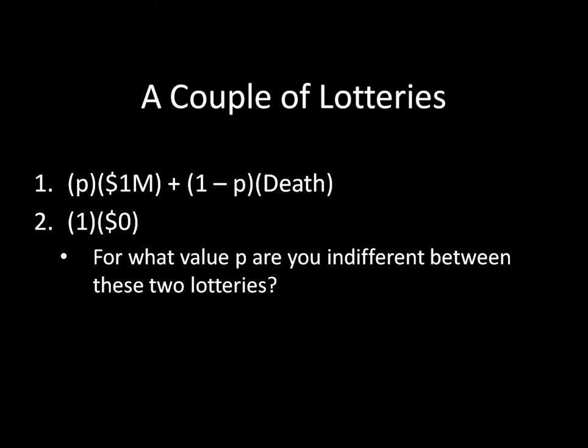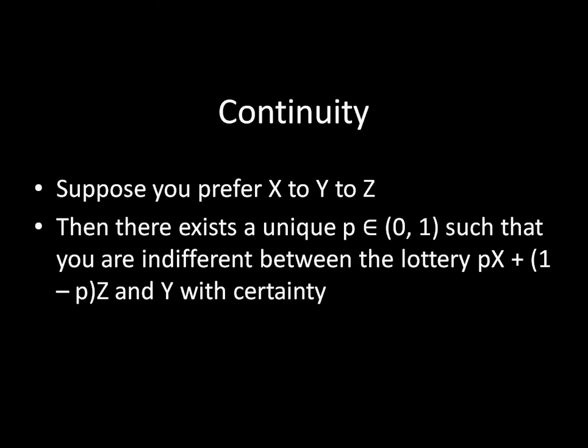Let's advance forward and learn what continuity is. Suppose that you prefer x to y to z. Continuity says that there exists a unique p — some probability between zero and one, not including zero or one — such that you are indifferent between the lottery of x with probability p and z with probability one minus p, and y with certainty.